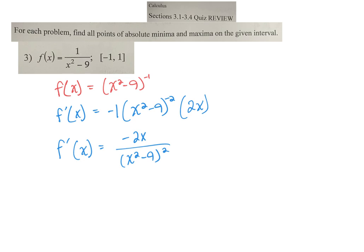Negative 2x over x squared minus 9 squared. So where it's equal to 0, that's going to be where the top is equal to 0. So where the top equals 0 is going to be one of my critical numbers. Where the bottom equals 0 is going to be where it's undefined.